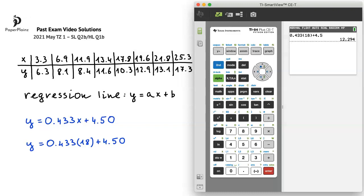Keep in mind that we have to round our answer to three significant figures. The first three significant figures are 1, 2 and 2, and the fourth significant figure is 9 which is more than 5, so we round the second 2 up to 3 and get that y is equal to 12.3.